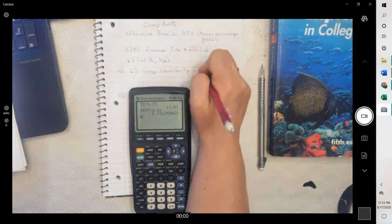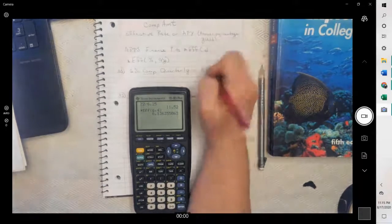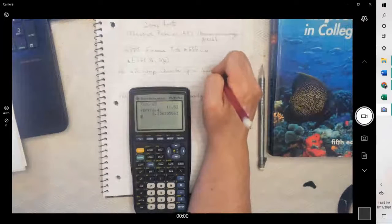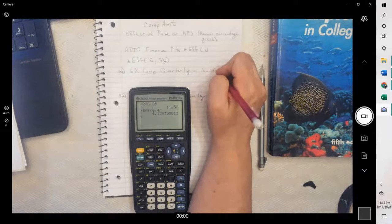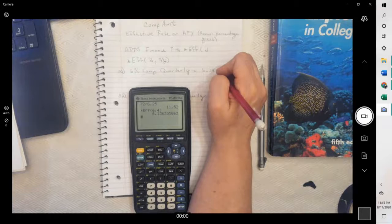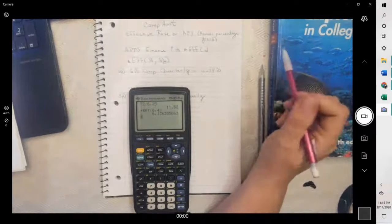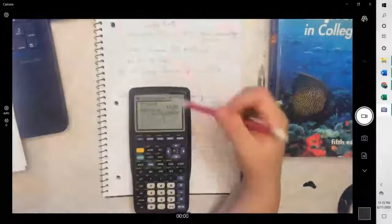And then quarterly is four times in a year. The answer is 6, depending on how many, we'll round to the hundredth, 6.14%. Notice it gives you the percent.